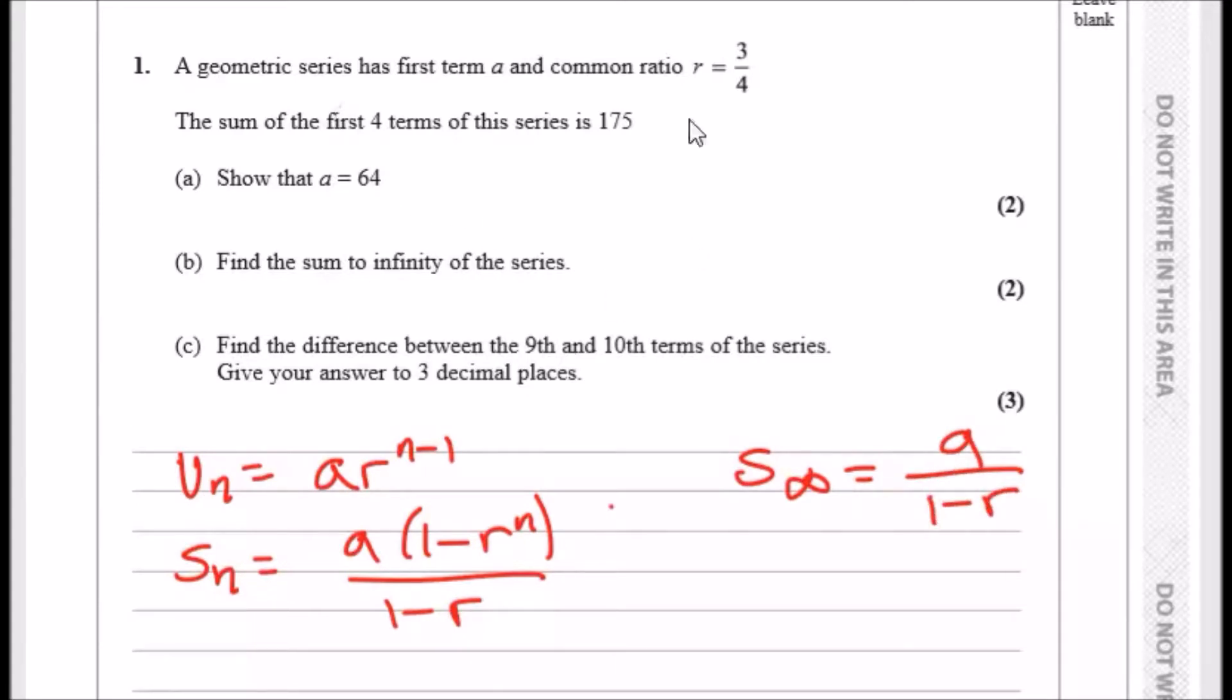And that's it. If you know all of this, then you can pretty much smash every question. So let's have a read. Going to one, a geometric series has first term a and common ratio r equals three quarters.